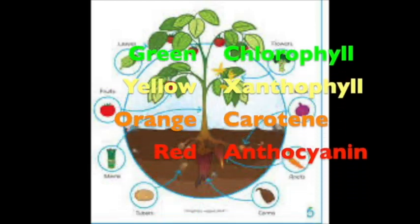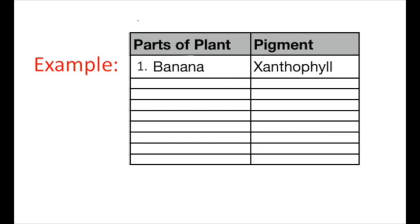Besides chlorophyll, there are other pigments inside the leaf, and these pigments give color to the stem, leaf, fruit, and other parts. So now in this class, you understood there are lots of things happening inside the plants. For your activity, find different fruits, flowers, roots, or stems and list out their colors and identify the pigment responsible. Thank you.